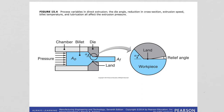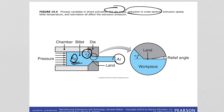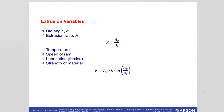The direct extrusion process variables include the die angle alpha, the reduction in cross section from A₀ to A_F (initial area to final area), extrusion speed, billet temperature, and lubrication. The extrusion ratio R is defined as the ratio of the cross-sectional area of the billet to that of the extruded part. Temperature, speed of the ram, lubrication, friction, and the strength of the material all affect the extrusion process.